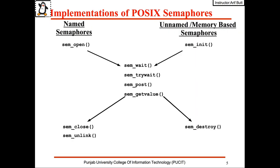To implement semaphores we can either use the System V API or the POSIX API, which is a newer one. In today's session we will talk about the POSIX API. In the POSIX API we can create and use two different types of semaphores.